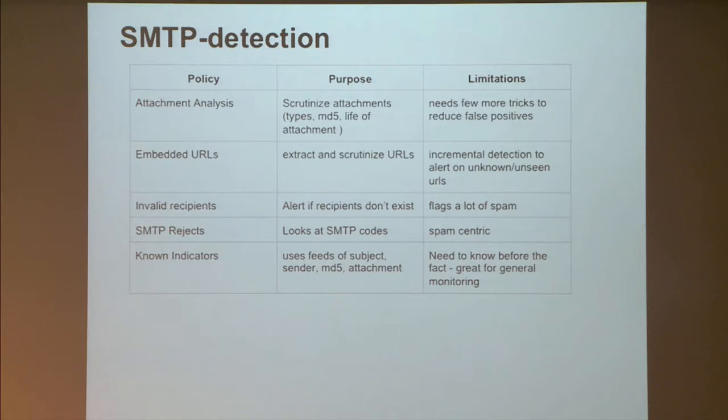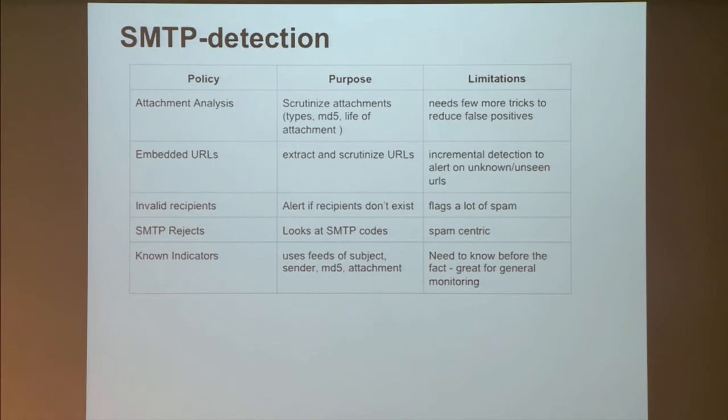Why did they miss it? In attachment analysis there were too many false positives — even though the document was renamed, it had the same MD5 as lab docs, but many legitimate attachments share MD5s. Embedded URL detection is incremental — you learn a URL is malicious after the fact. Invalid recipients and SMTP rejects detect a lot of spam but not this kind of activity. 'Important Document' is not a useful known indicator — you see it all the time legitimately.